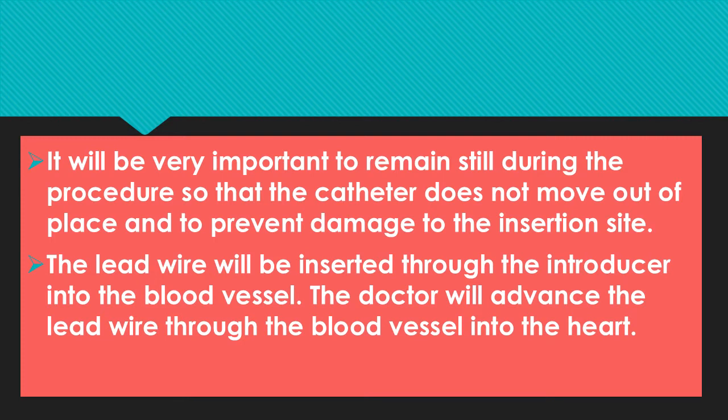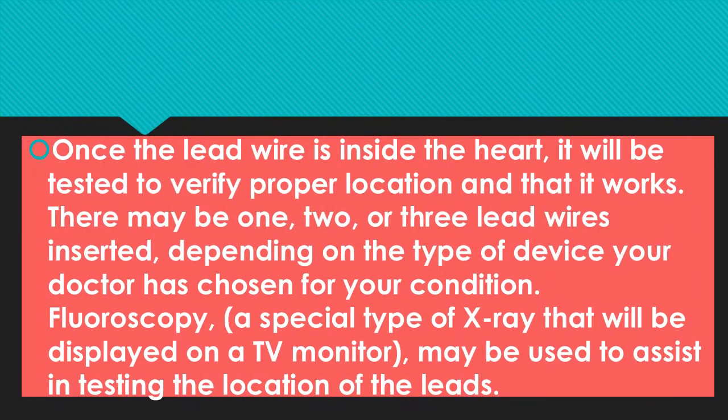It is very important that the patient remains still during the procedure so that the catheter does not move out of place and to prevent damage to the insertion site. Everything is visualized through fluoroscopy on the monitor so the doctor can guide placement. The lead wire is inserted through the introducer into the blood vessel and advanced into the heart. Once confirmed inside the heart, it is tested to verify proper location. There may be one, two, or three lead wires inserted depending on the type of device — single chamber, dual chamber, or triple chamber — depending on patient condition.